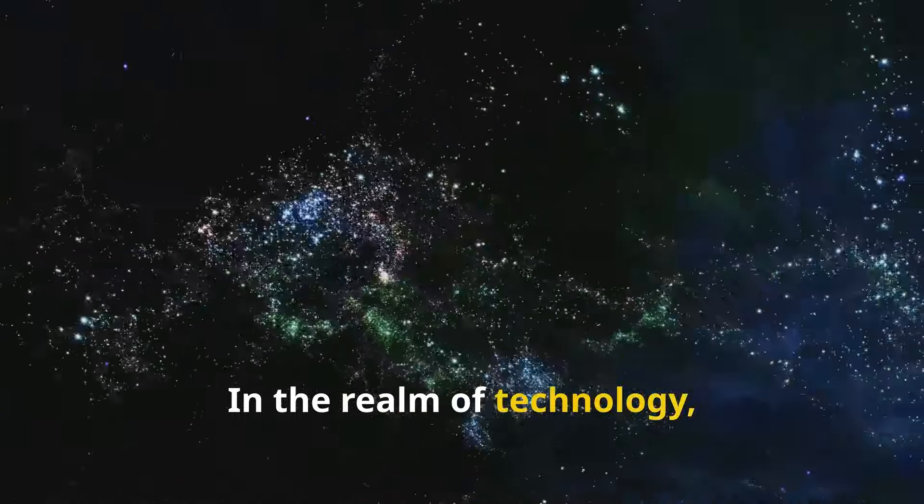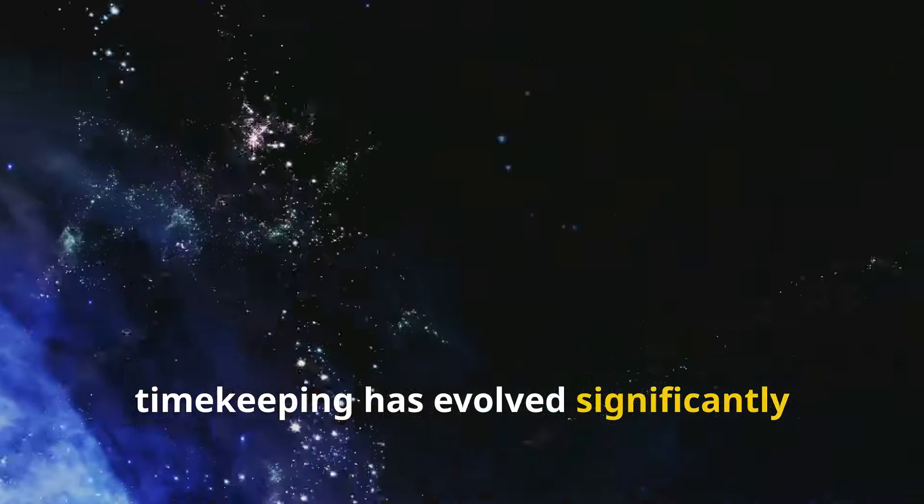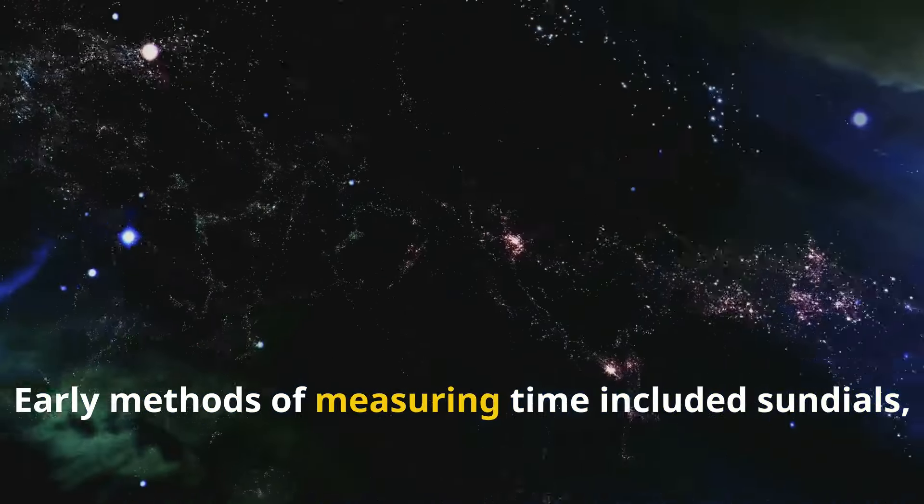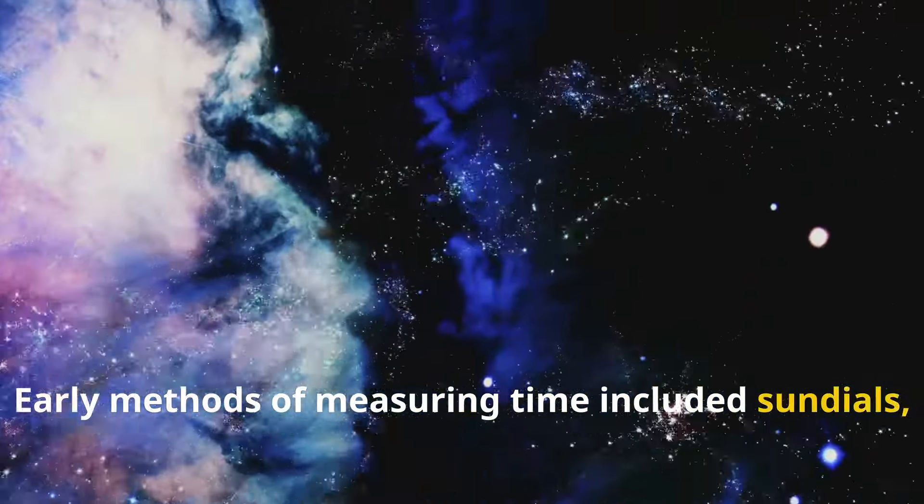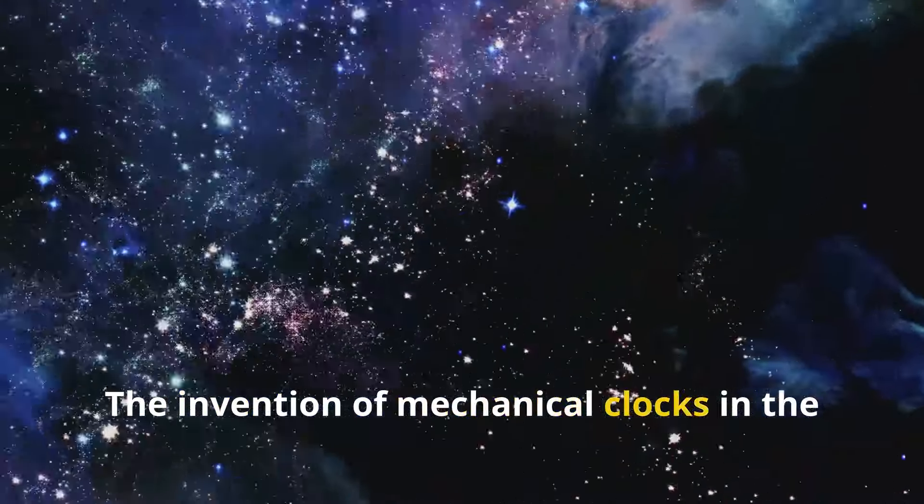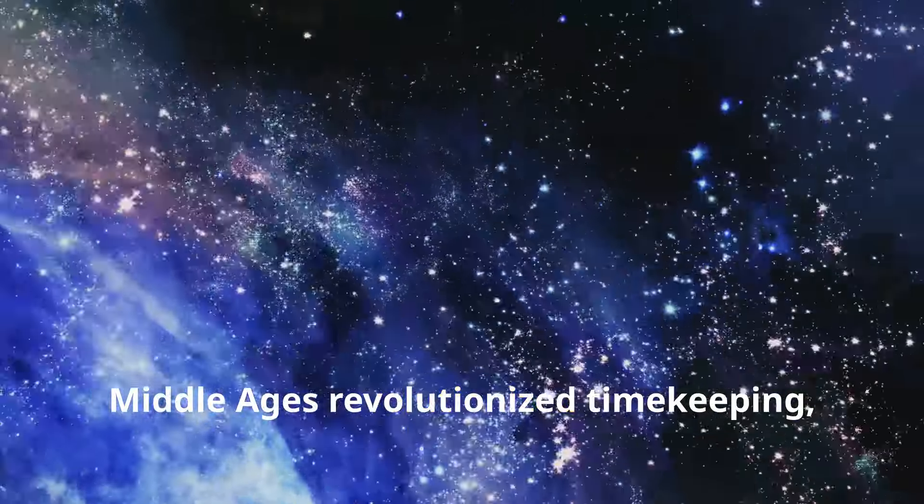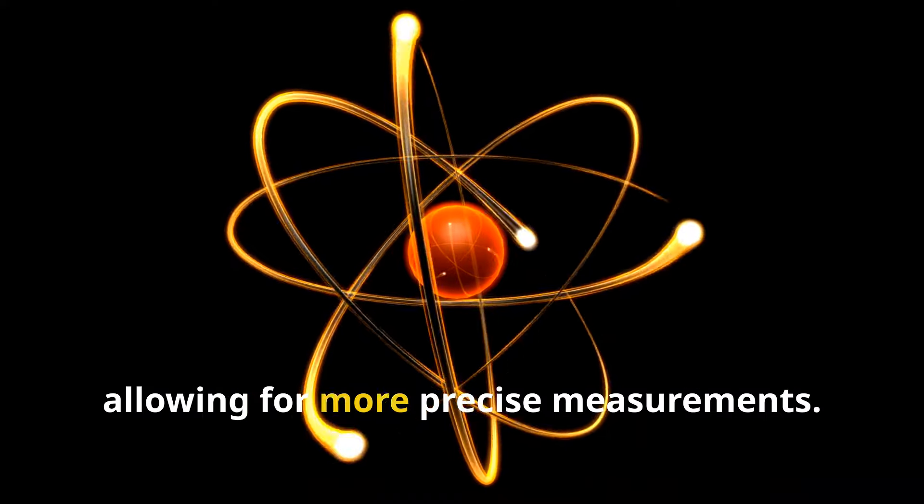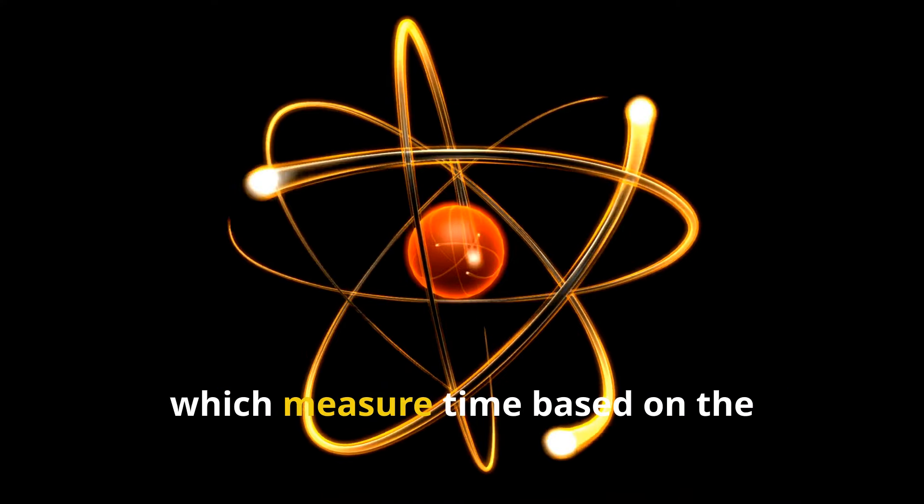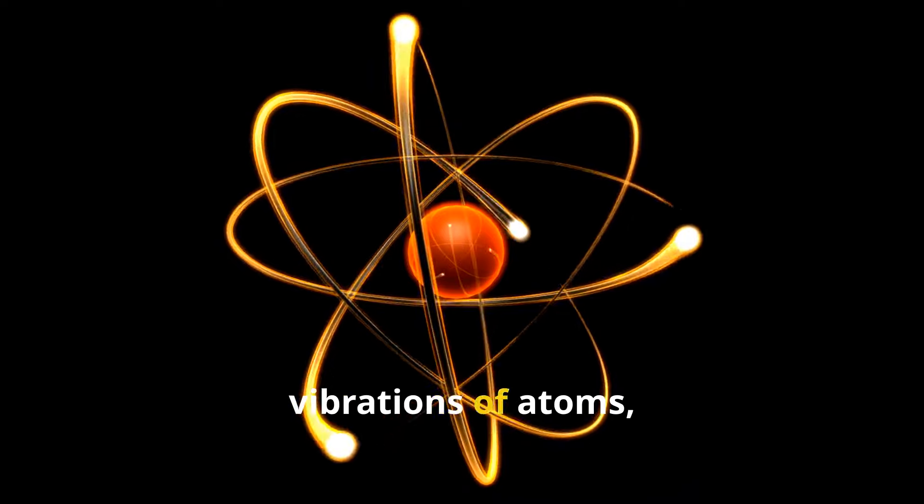In the realm of technology, timekeeping has evolved significantly over the centuries. Early methods of measuring time included sundials, water clocks, and hourglasses. The invention of mechanical clocks in the Middle Ages revolutionized timekeeping, allowing for more precise measurements. Today, atomic clocks, which measure time based on the vibrations of atoms, provide incredibly accurate timekeeping, essential for technologies like GPS and global communications.